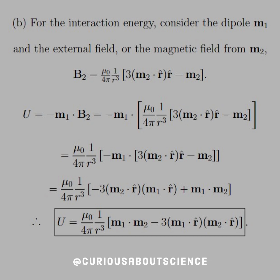All right, moving on to B. For the interaction energy, consider the dipole M1 and the external field or the magnetic field from M2 such that B2 is equal to what we saw written down, the B2 being the magnetic field of the dipole. And when we take the dot product, we see that all these components move through,